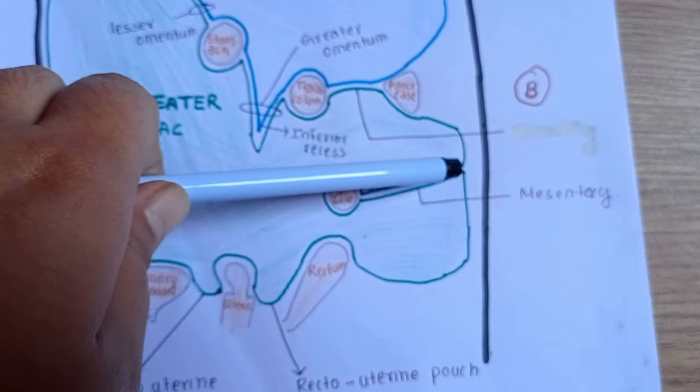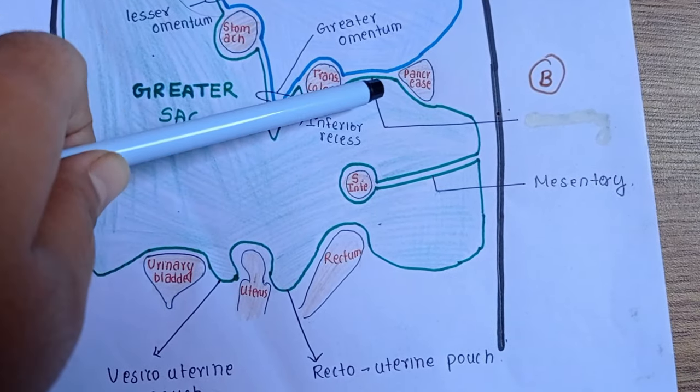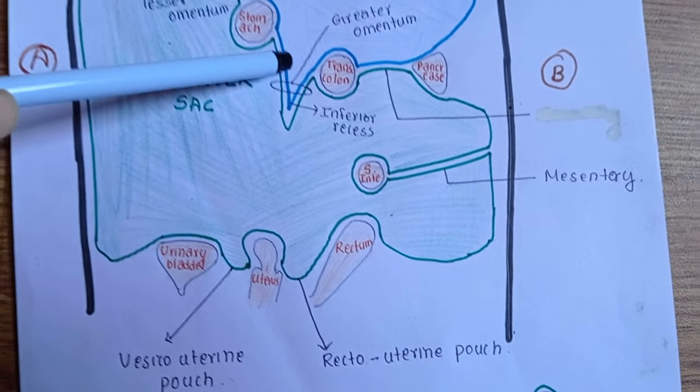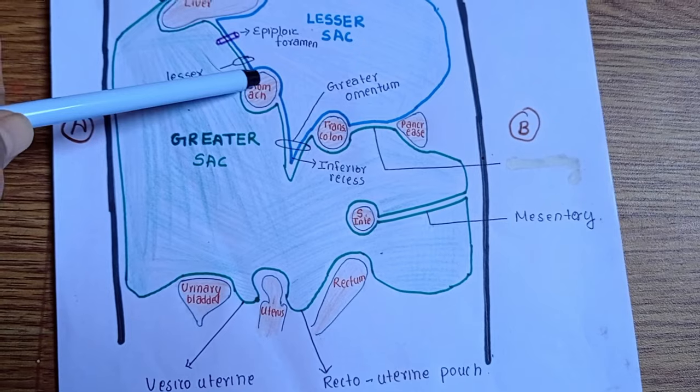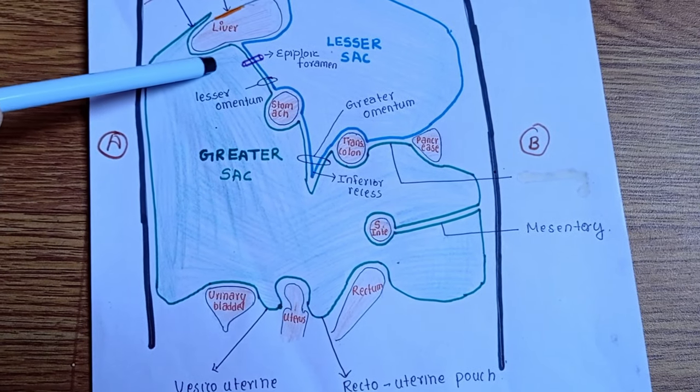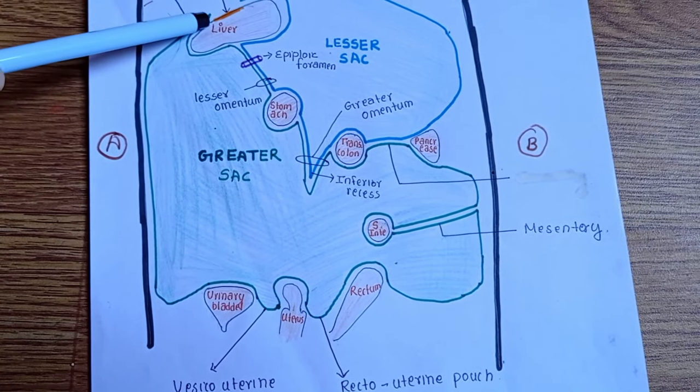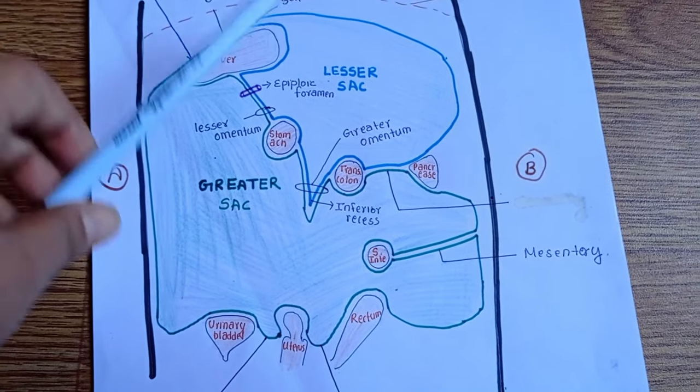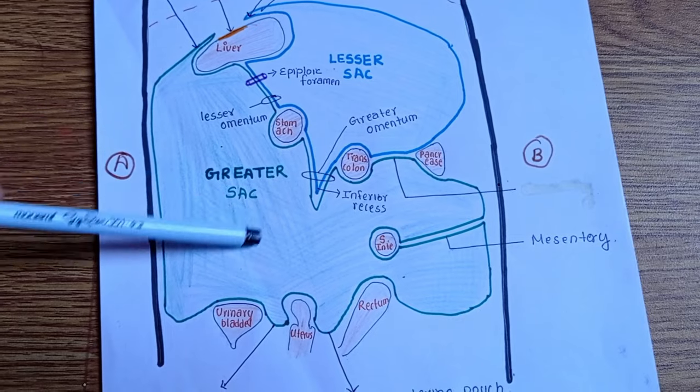Then it moves to the pancreas, giving its folding to transverse colon, then to the stomach, then again goes and attaches to the part here in the liver. So this one forms the greater sac.